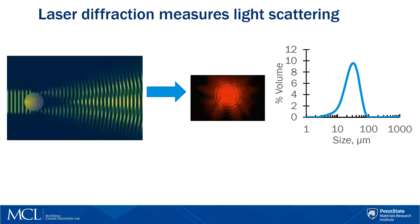The particle is hit with a monochromatic light and light is diffracted from its edge. This begins to create waves that overlap and create an interference or diffraction pattern. You can see radiating lines — black lines mean destructive interference of waves, and bright lines mean constructive interference. From the diffraction pattern we can derive size information.